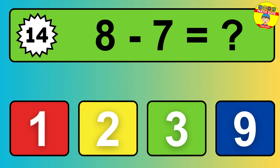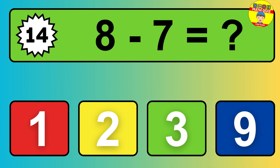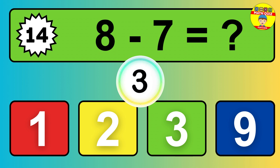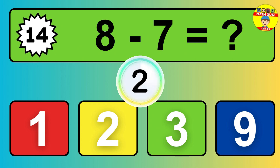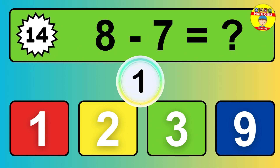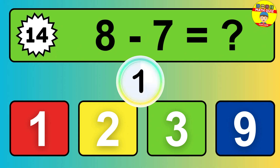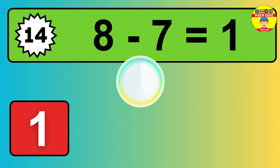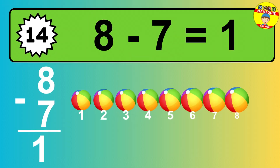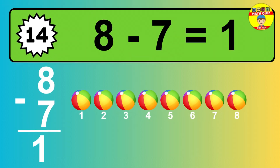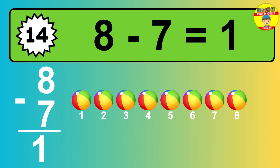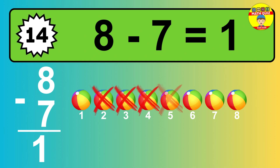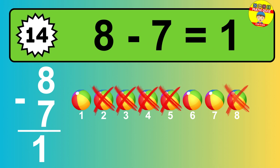Question 14: 8 minus 7 equals what? The answer is, 8 minus 7 is 1. Let's count it: 1.